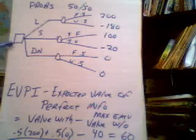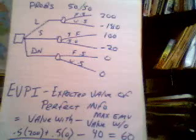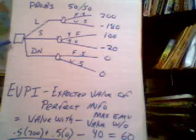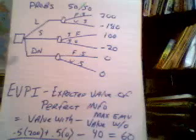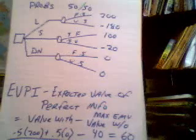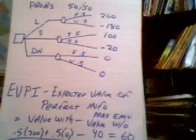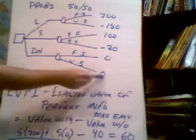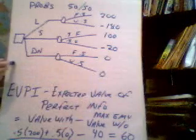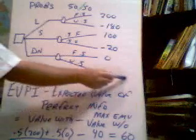This is called the decision tree here, and this is a nice graphical way to show your decision and your states of nature, especially if you've got decision, states of nature, and then more decisions and states of nature. You can think of this as a timeline. This is what's happening now, we make our decision, and this is what happens into the future.